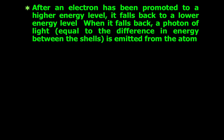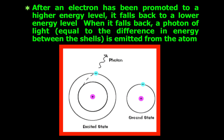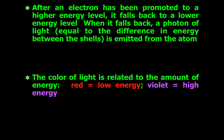After an electron has been promoted to a higher energy level, it falls back to a lower energy level, and when it falls back, a photon of light equal to the difference in energy between the shells is emitted from the atom. When an electron in an excited state falls back down to a lower energy level, it emits energy in the form of light. The color of the light produced is related to the amount of energy released. Red light is low energy; violet is high energy.